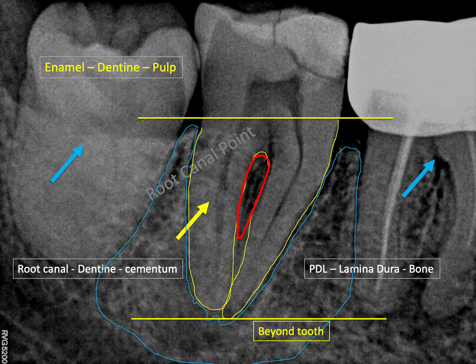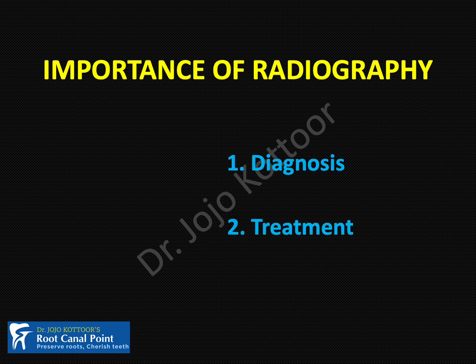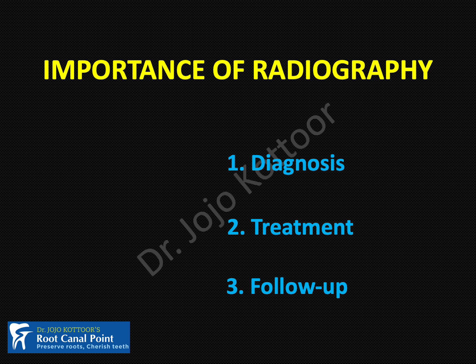This is how a radiograph is correctly interpreted: we start from the crown, then the root, then the periapex, then structures beyond the periapex, and finally the adjacent teeth. Radiographs are important because they help us in diagnosis before treatment, during treatment — such as for working length or assessing depth during vital pulp therapy — and we take postoperative radiographs as well. So radiographs are used preoperatively, intraoperatively, and postoperatively.